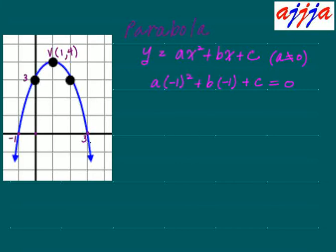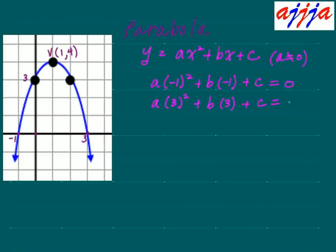Next one — the right-hand side. So 3 is 0, right? That means: a times 3 squared, plus b times 3 — actually 3b — plus c equals 0.